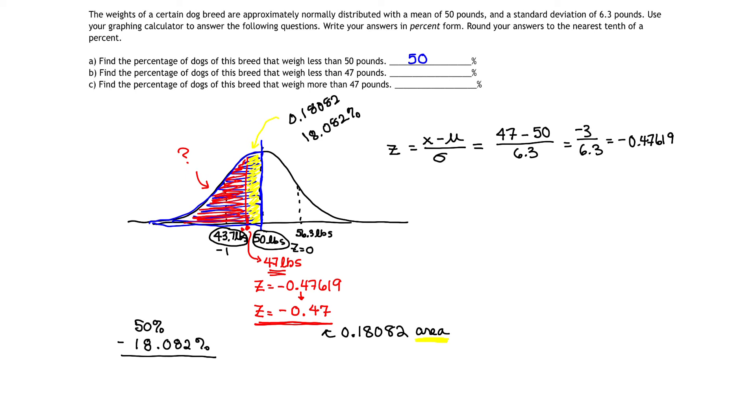If I subtract 50 minus 18.082%, that's going to give us 31.918%. This is the part that represents the red area on my curve, 31.918%. That is how much is shaded here on the red side. It's 50% on the left. Take away the yellow band. The yellow band came by looking at our Z score of negative 0.47 on that Z table. So rounding my answer to the nearest tenth tells me that I have in the red area 31.9% of the area being less than 47 pounds.